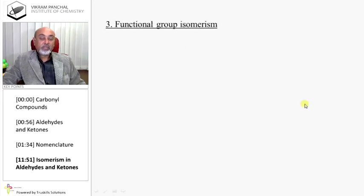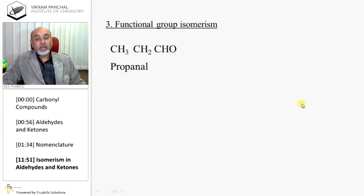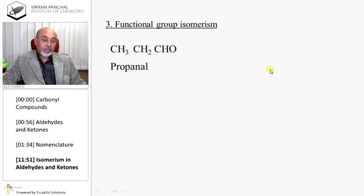Functional group isomers: aldehydes and ketones are functional group isomers of each other. For example, propanal and propanone are functional group isomers.